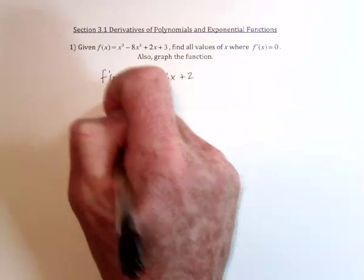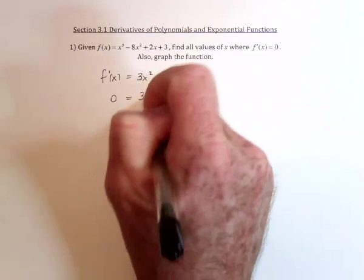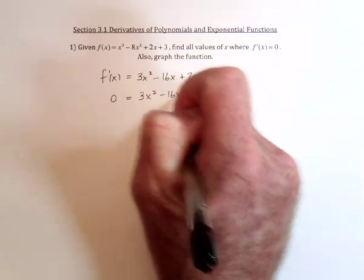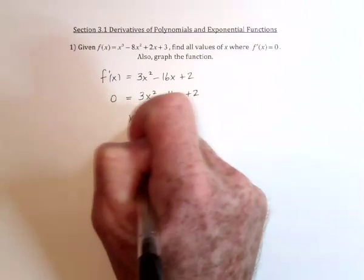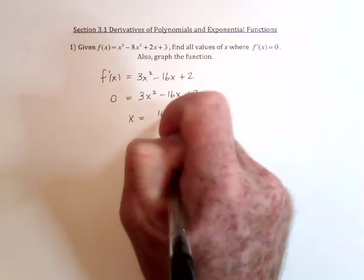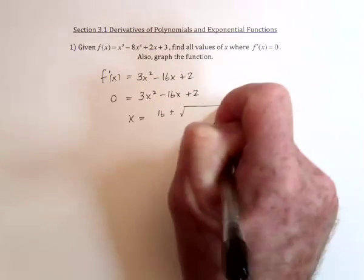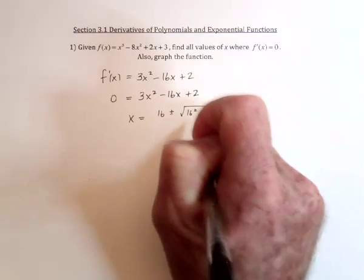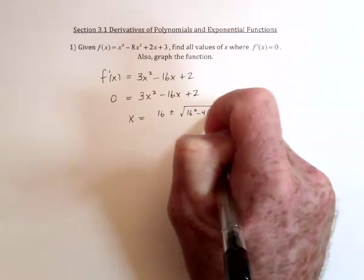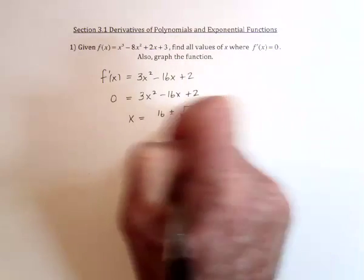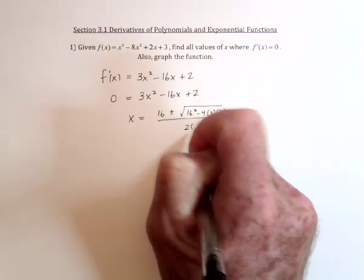If we set this equal to zero, we can use the quadratic formula. X equals negative b plus or minus the square root of b squared minus 4ac, all divided by 2a.